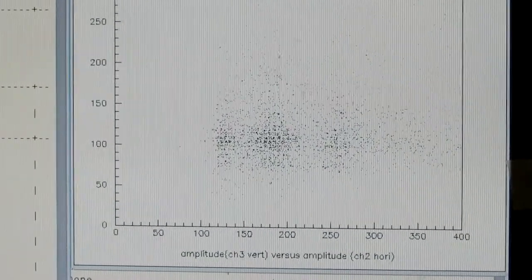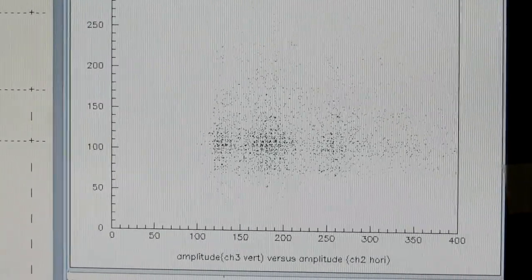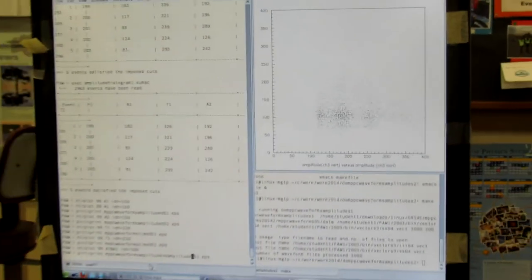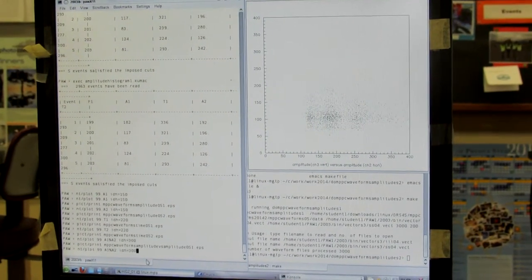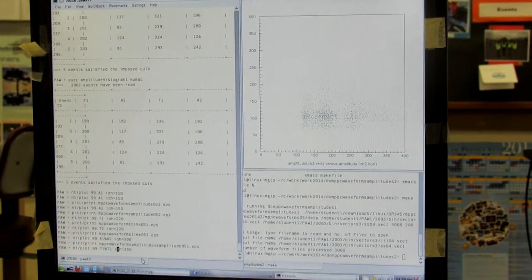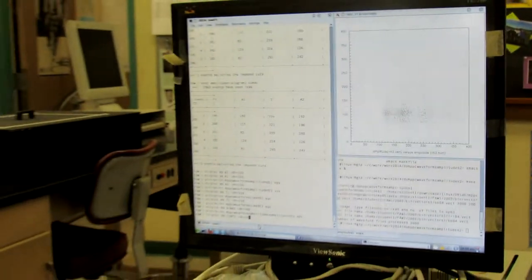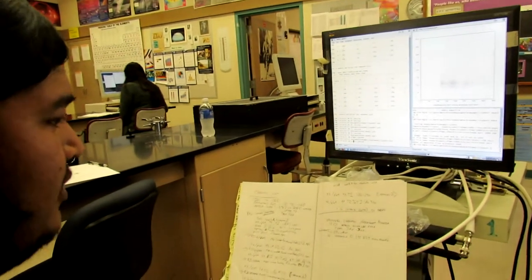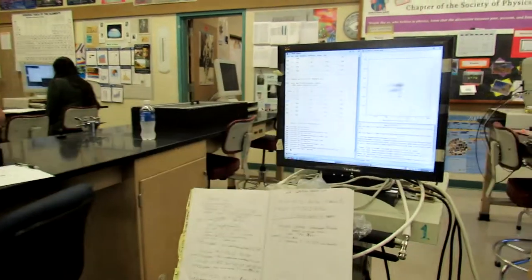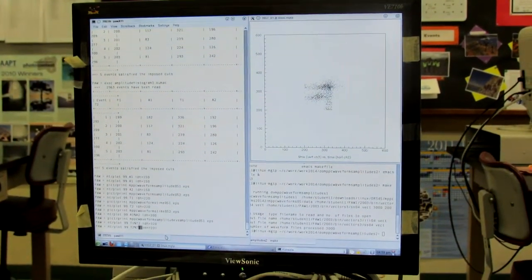Amplitude versus amplitude. Now we can do time 1 versus time 2. And that ID number is 320. Wait, I did it backwards. It's supposed to be time 2 versus time 1.